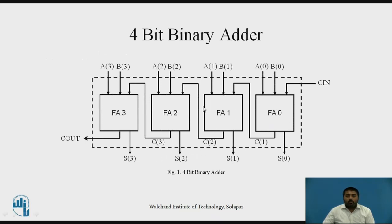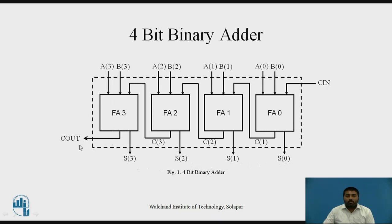You can observe that there are 4 full adders used. Each one is having 3 inputs: 2 are A and B — A of 0, B of 0, A of 1, B of 1, A of 2, B of 2, and A of 3, B of 3. The third input for each full adder is the carry. For the first full adder it is applied externally, and for the remaining 3 full adders, the output carry from the previous full adder is connected as input. Each full adder also gives a sum output: S of 0, S of 1, S of 2, and S of 3. The last carry from the full adder is the final carry of the 4-bit binary adder.